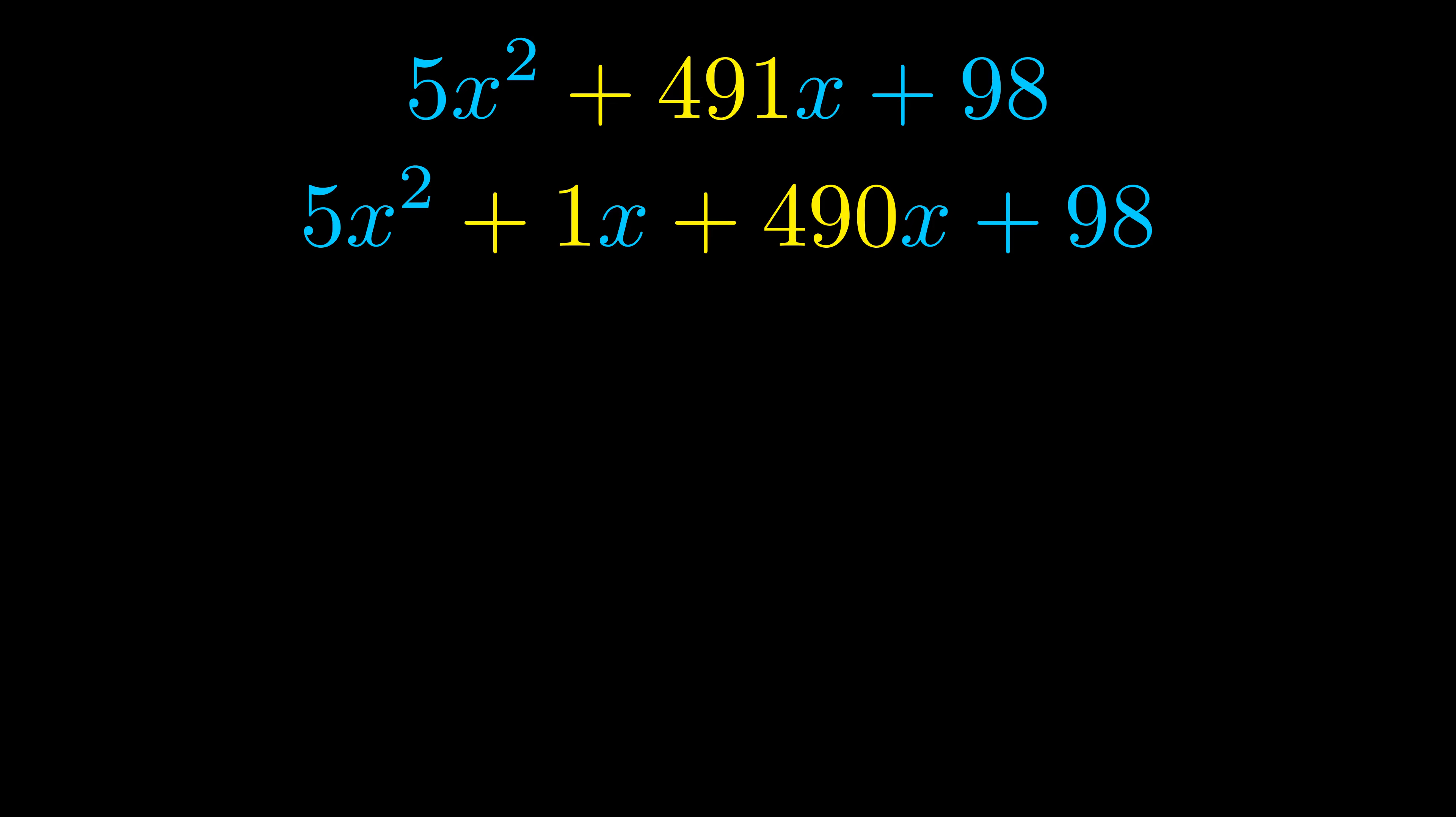Once we've done this we go ahead and put parentheses around the first term and the last term and we do that so that we can take the greatest common factor out of both terms.